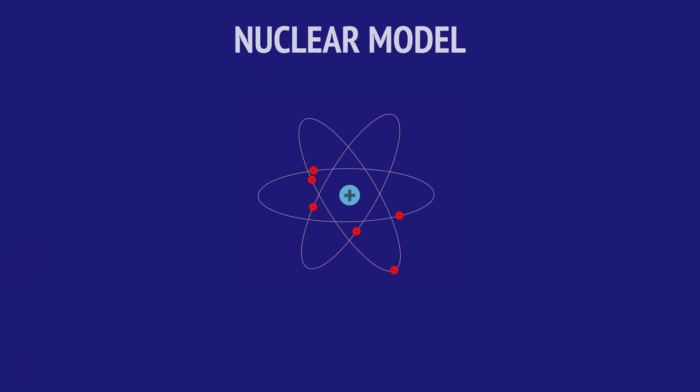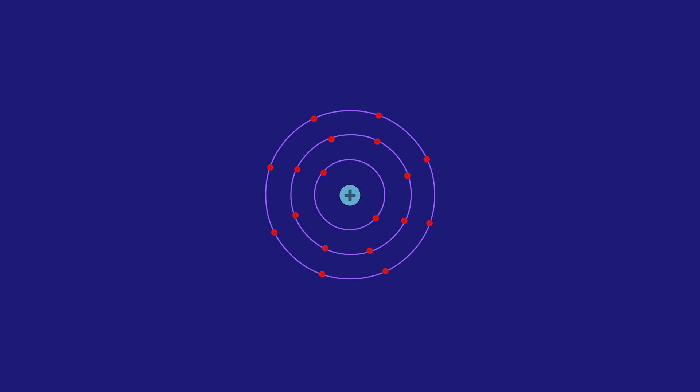But there was one problem. Physicists knew that orbiting charges would radiate energy and fall into the nucleus. In the following video, we'll see how a Danish physicist named Niels Bohr would solve this issue in 1913 by proposing the idea of stable electron orbits.